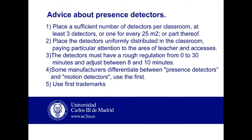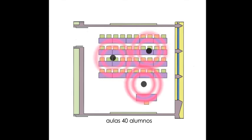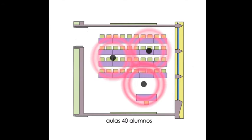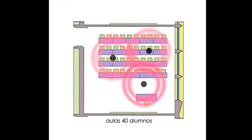4. Differentiate between presence detectors and motion detectors. Use the first. 5. Use first trademarks. When positioning the detectors, always put one near the place of the professor. The rest should be uniformly distributed. Check that the scope covers all the classroom.